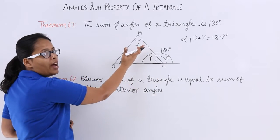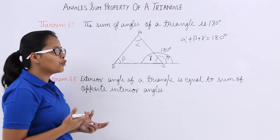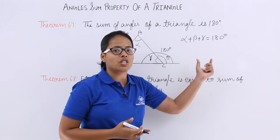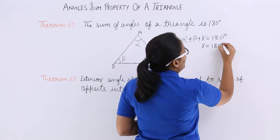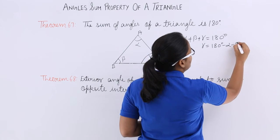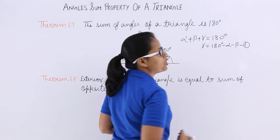So to prove that, I will be taking this equation from where the value of gamma will be 180 degrees minus alpha minus beta. Let's suppose this is equation 1.